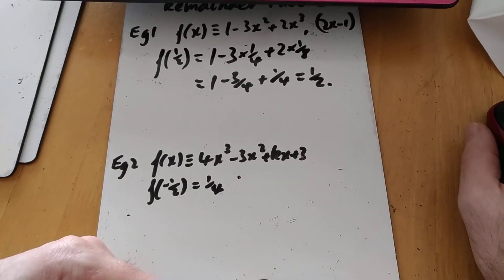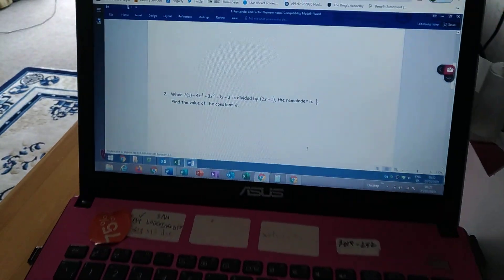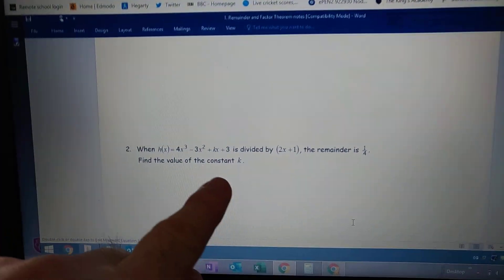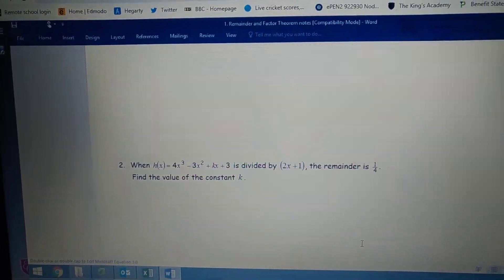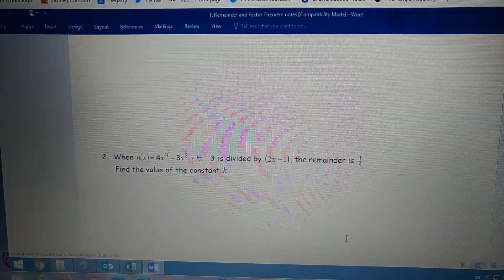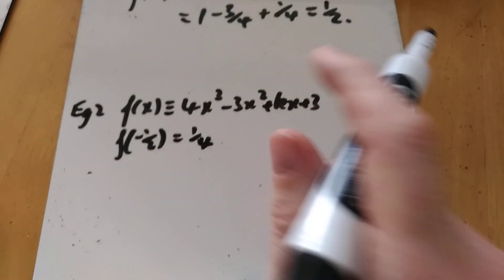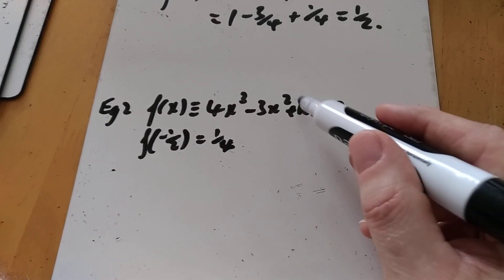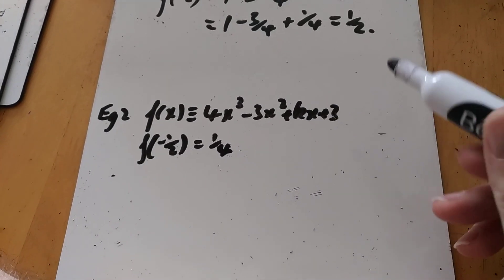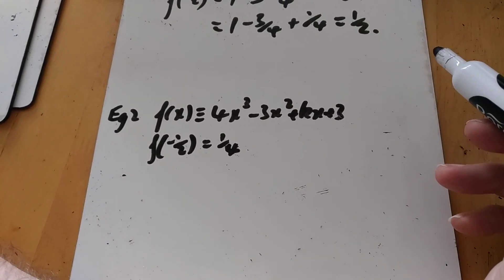Second example. It says when h(x), this cubic with a k in, is divided by 2x plus 1, the remainder is a quarter. So they give us what the remainder is, but we're missing one of the terms here. You can do these by algebraic long division, but I would really not recommend it. The k makes it awkward, you've got minus sign mistakes all over the place, and it just makes it really difficult.